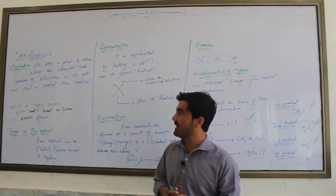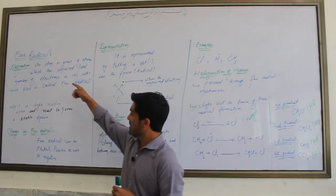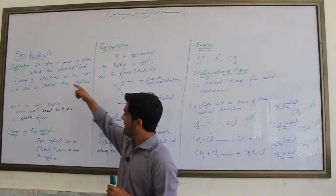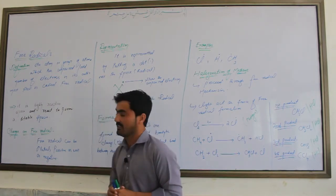Free radicals are defined as an atom or group of atoms which has an unpaired odd number of electrons in its outermost shell.